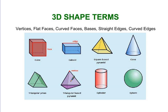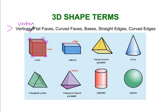We're going to explain all these words in this video. Vertices are corners, right there. That's a vertex, a vertex, a vertex. The singular of the word is vertex. The plural of that word is vertices.